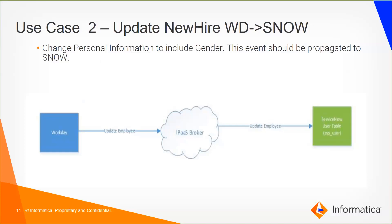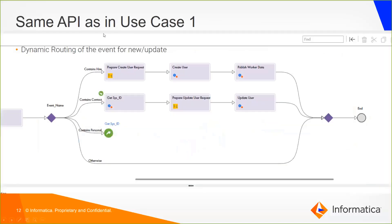In the second use case, we are going to change personal information — specifically the gender for the new hire we just created in Workday. The event received from Workday is going to be routed to the same API. Inside the process we are going to do dynamic routing: if it's a new hire we are going to create a user, if it's a personal information change we're going to update the user. You can see here where we are doing the dynamic routing of the incoming event.